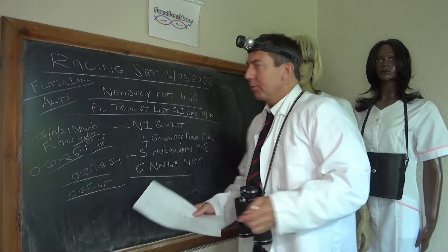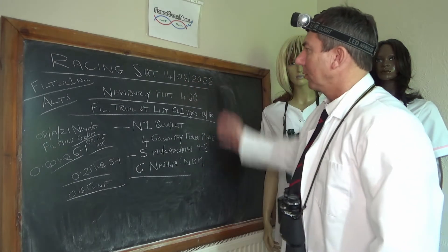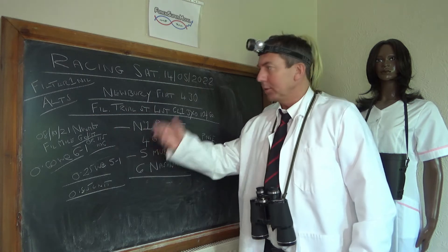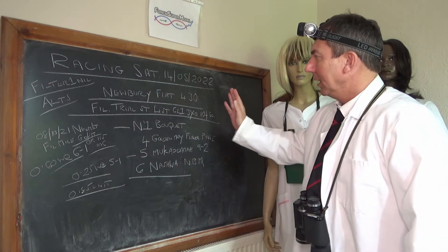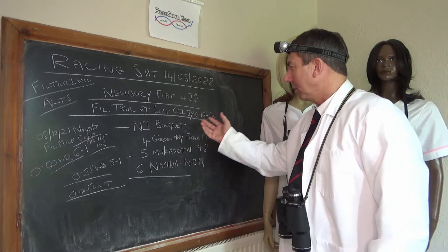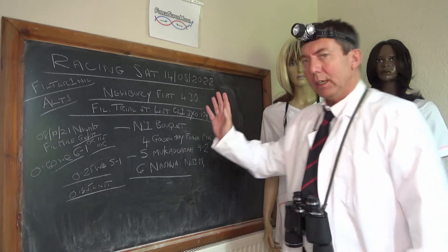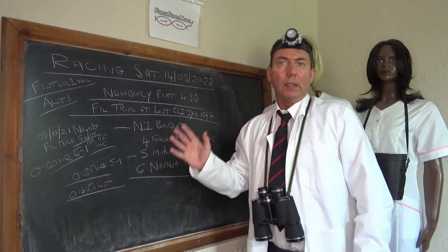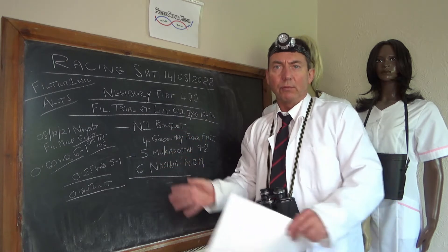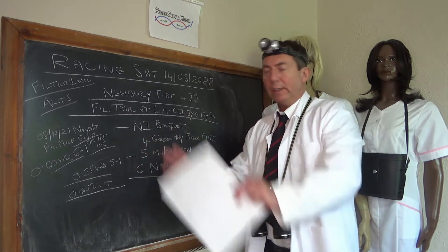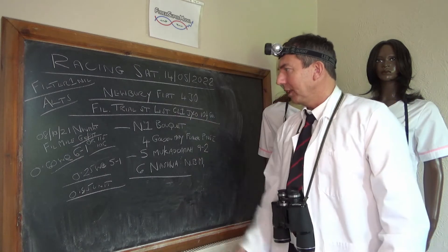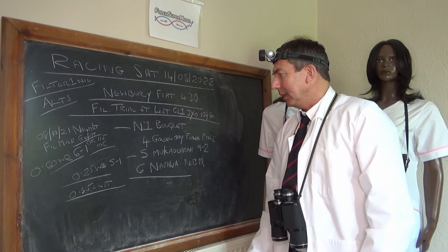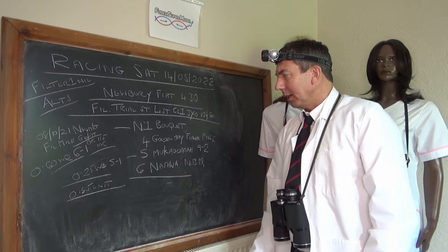We're back, we've written up today's racing for Saturday the 14th. No filter one which is our structural filter but we do have an alternate at Newbury on the flat 4.30. It's a Fillies Trial Stakes, listed class one, three-year-old, 10 furlong and good. It's part of the pattern, a series of races leading to classics and so on. It's three-year-old fillies and there's about seven in the race but it chops up accordingly.